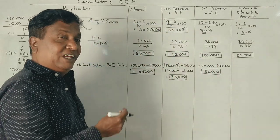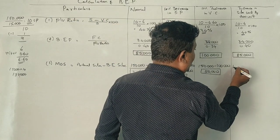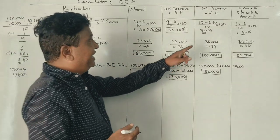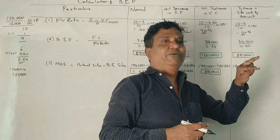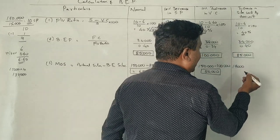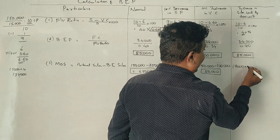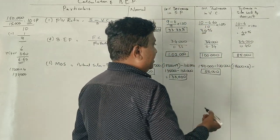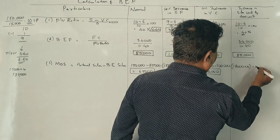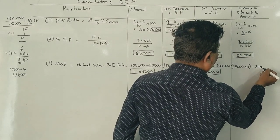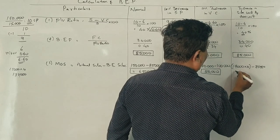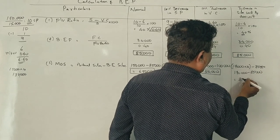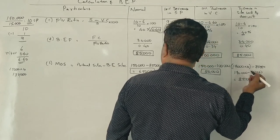If sales units are 17,000, then sales value is 1,70,000. Break-even point is 85,000. So 1,70,000 minus 85,000 equals 85,000 margin of safety. All the questions are answered.